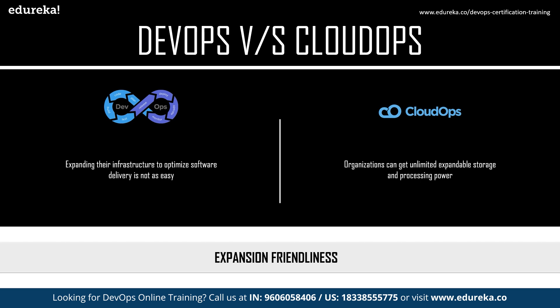The next difference is expansion friendliness. With Cloud Ops, organizations can get unlimited, expandable storage and processing power as per their needs. But in the case of DevOps, expanding or upgrading the infrastructure to optimize software delivery is not as easy — it is potentially expensive and a complicated procedure.